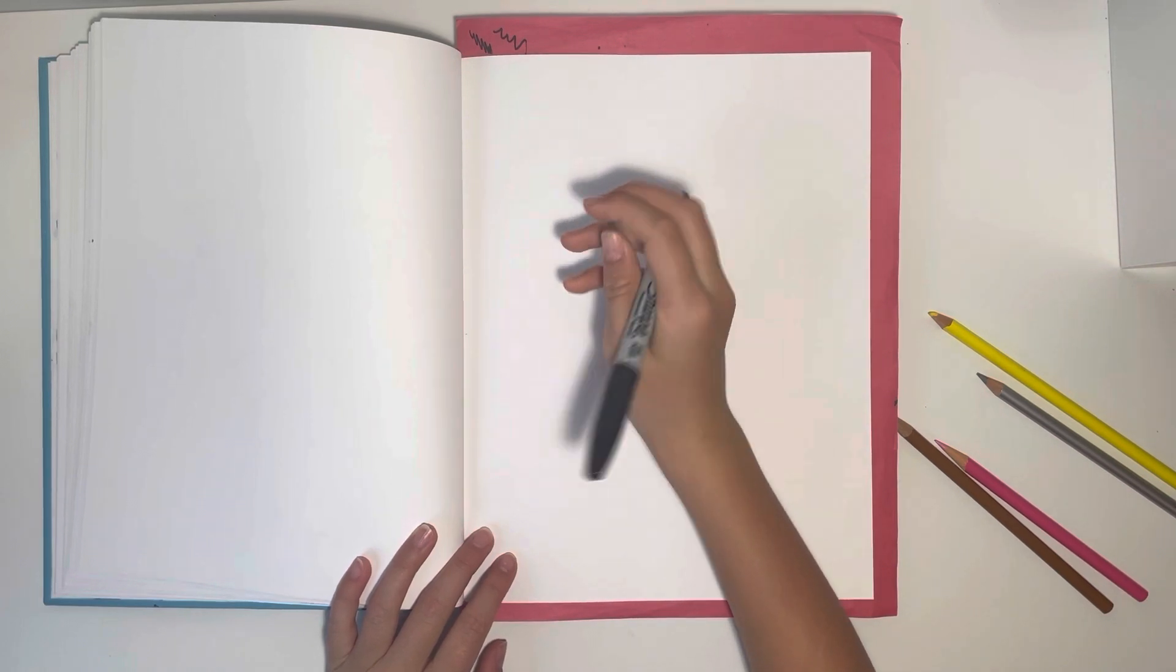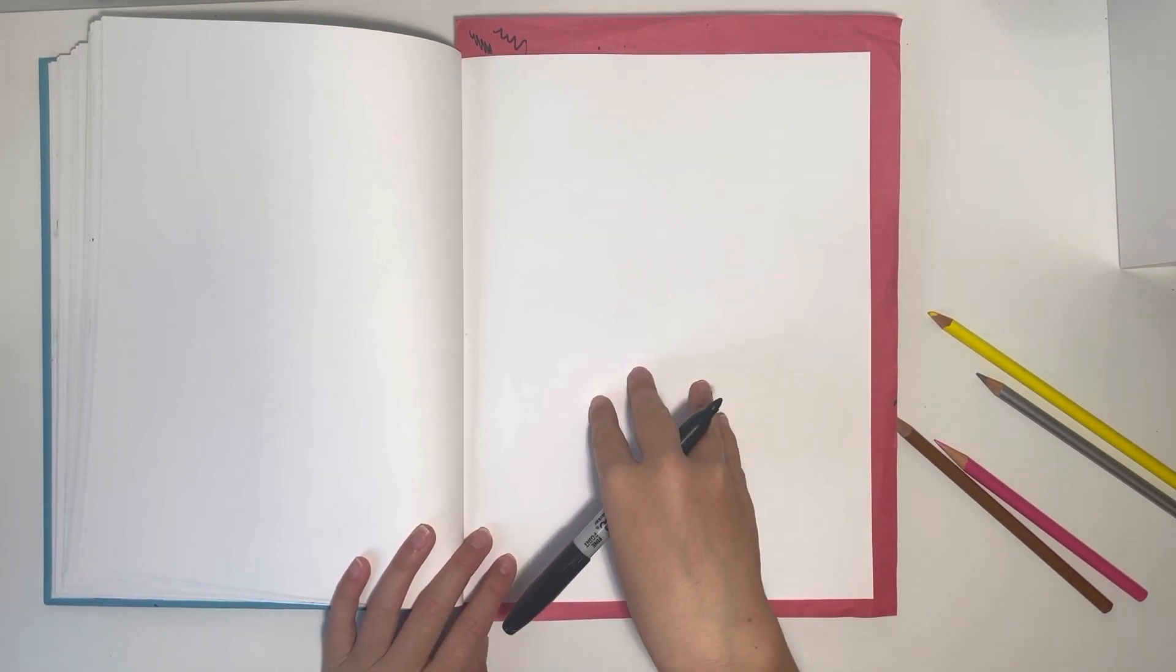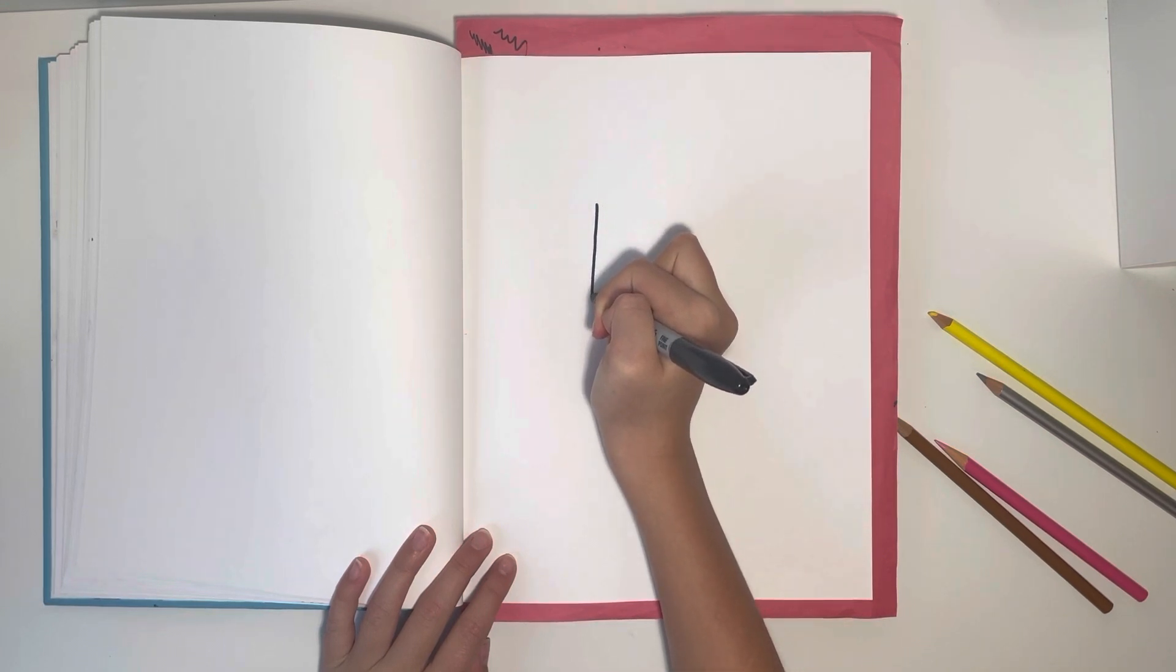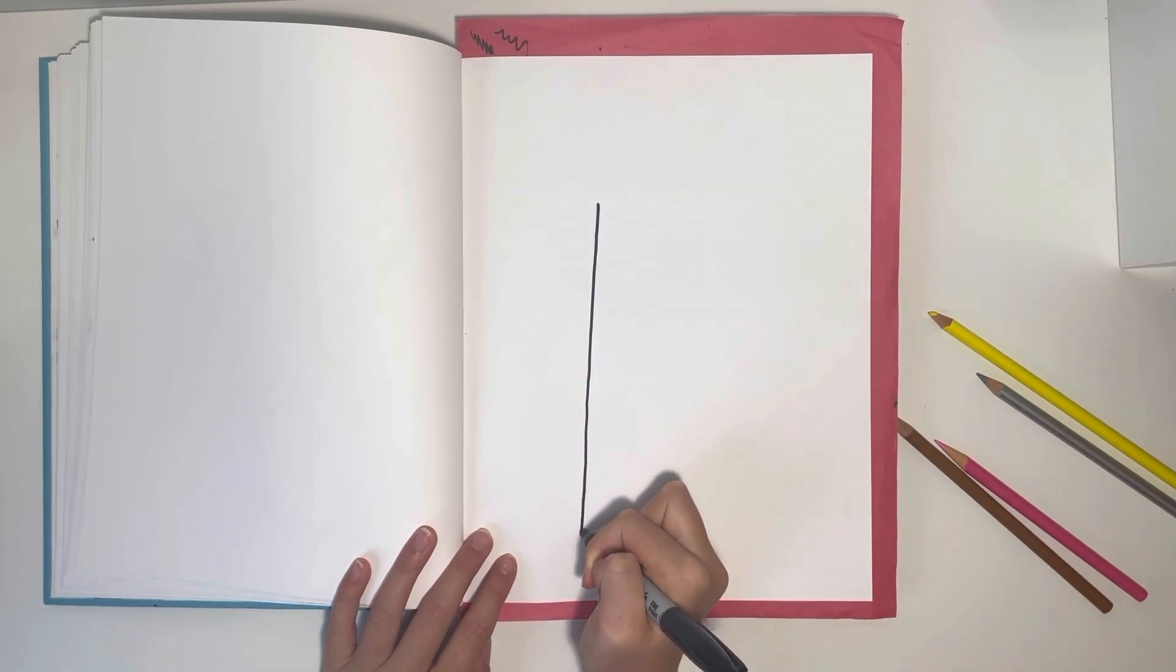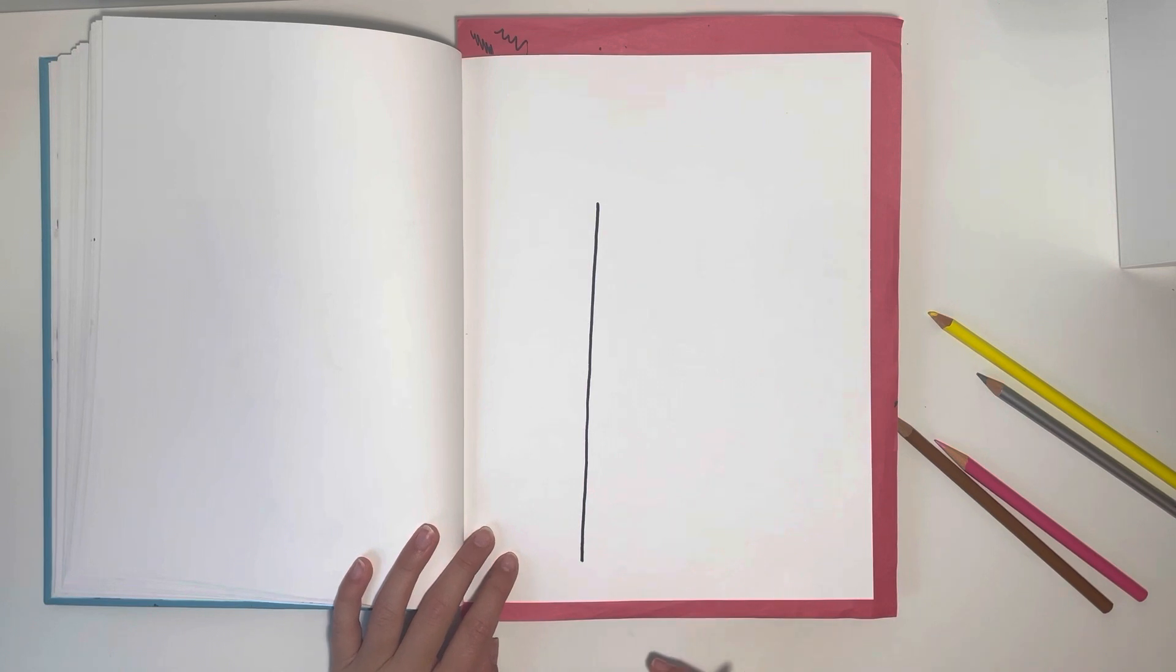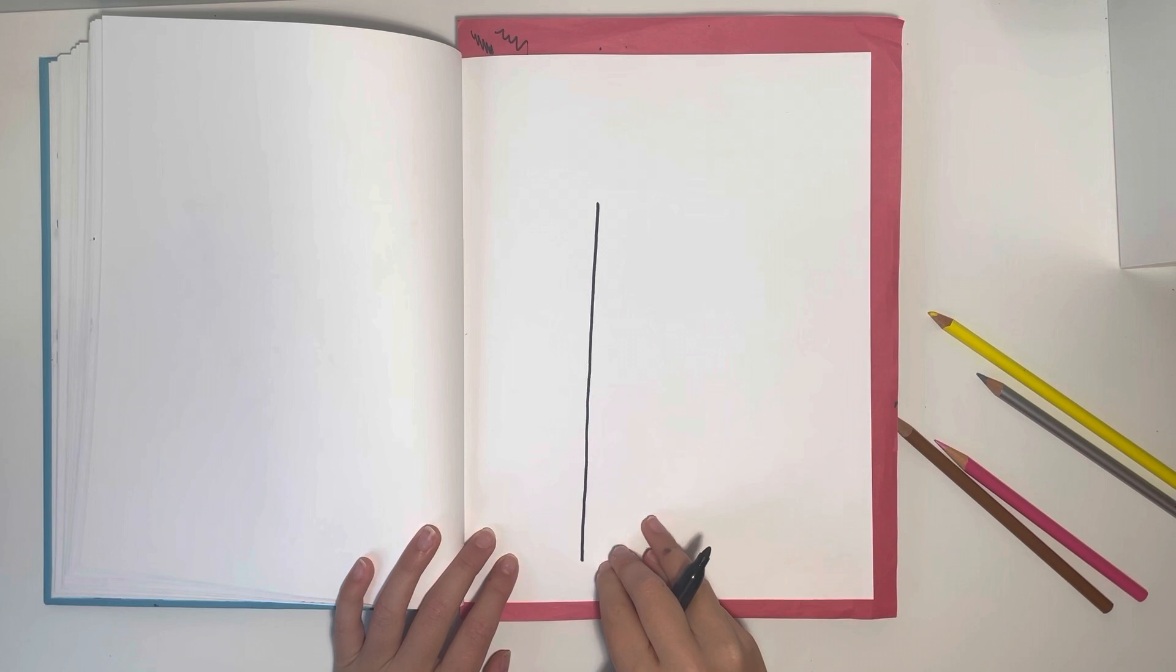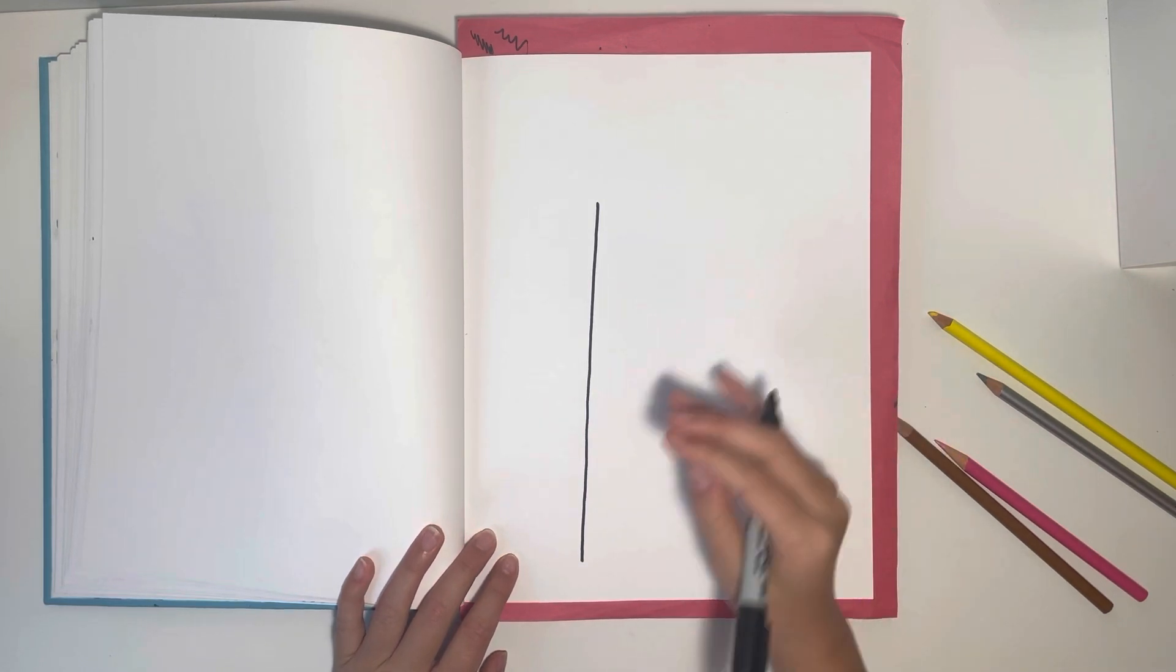I'm first going to start by drawing a line on my paper. So my line is not going to be right in the middle but it's going to be a little off towards the side. Next I'm going to draw a line right next to it and I want to make sure it stays closed and doesn't get too wide.